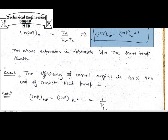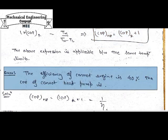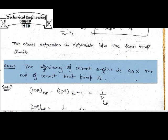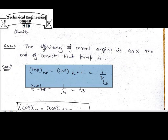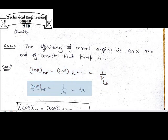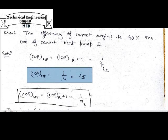Let us solve one question to understand COP. Suppose the efficiency of a Carnot engine is given as 40%. What is the COP of the Carnot heat pump? Carnot efficiency is 40%, so COP of heat pump = 1 / engine efficiency = 1 / 0.4 = 2.5. If we wanted to calculate COP of the refrigerator, we subtract 1: COP_refrigerator = 2.5 − 1 = 1.5.